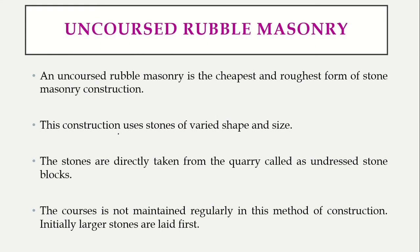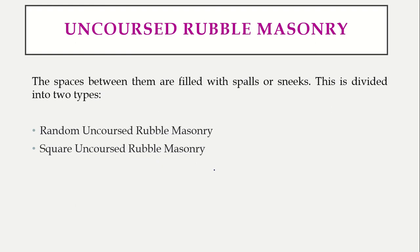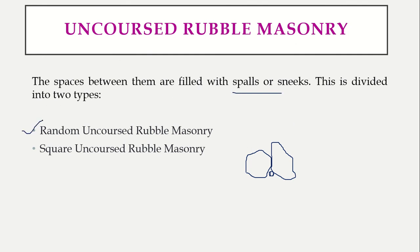Uncoursed rubble masonry is one of the cheapest and roughest forms of stone masonry. It consists of stones of various sizes and shapes taken directly from the quarry — perfectly undressed. The bigger stones are placed at the bottom, smaller ones on top. Whatever spaces exist between the undressed, irregular stones are filled with small stone pieces called spalls. Uncoursed rubble masonry is further of two types: random and square.